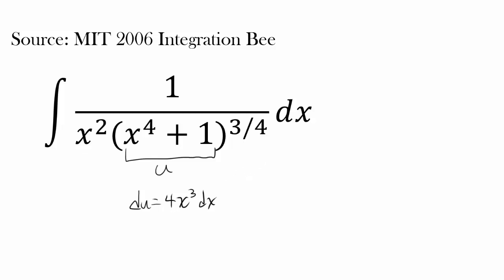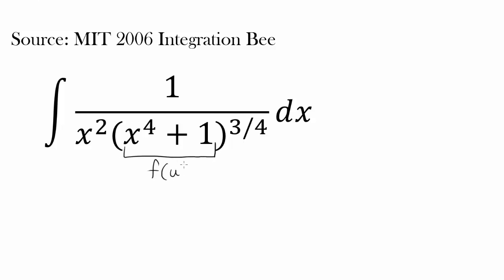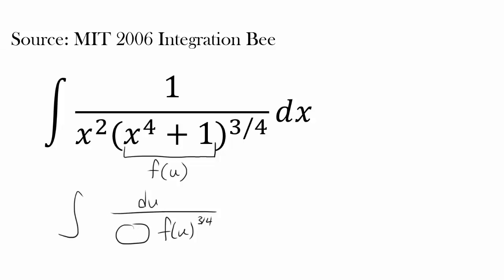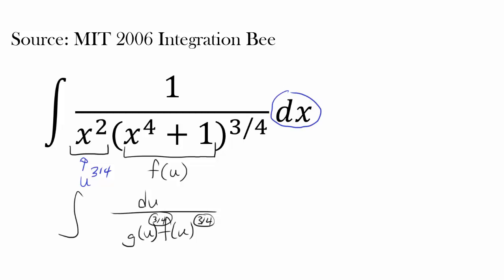Are there anything else we can try? We know x to the fourth plus 1, this enclosed expression, is being raised to the three-fourths power. So if we can somehow write the inside as some function of u, we'd have an integral with some function of u raised to the three-fourths power. Maybe using x squared we can make another expression of u to the three-fourths power, factor the three-fourths powers out, and do things with what's left. But can we actually change x squared into u to the three-fourths? What would the substitution even be, and what does dx change to? This looks very tough.